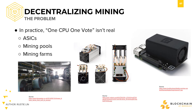Mining pools and mining farms are pretty straightforward, and they're usually run by a single entity. ASICs, on the other hand, are also centralized, but in the sense that ASICs can cost a lot of money. And this means that only people with enough capital can acquire them, centralizing the mining process.